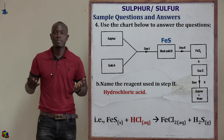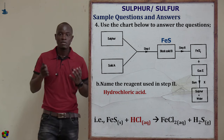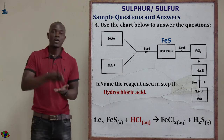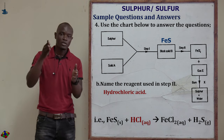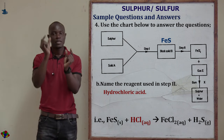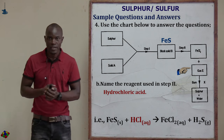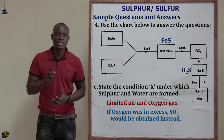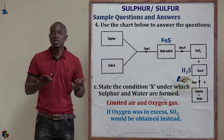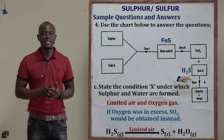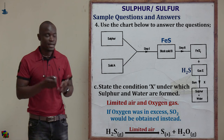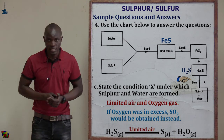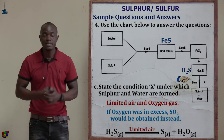To summarize the flow chart: sulfur reacts with iron to give iron(II) sulfide; iron(II) sulfide reacts with hydrochloric acid to give iron(II) chloride and hydrogen sulfide. Part C asks for the condition under which sulfur and water are formed — from the chart, that condition is a limited supply of oxygen gas.